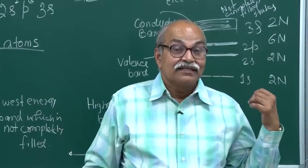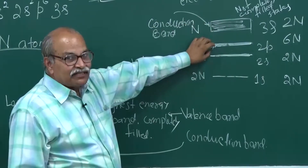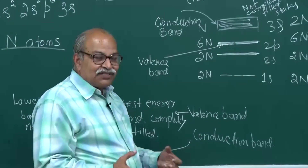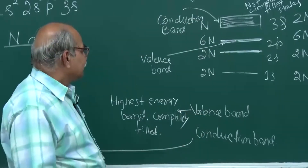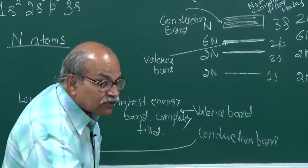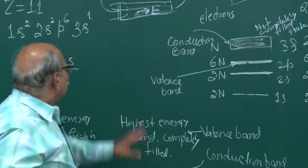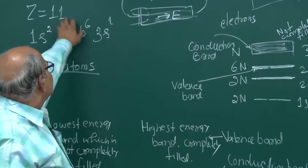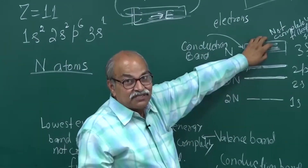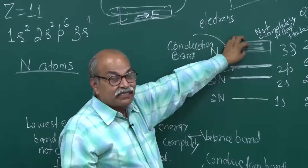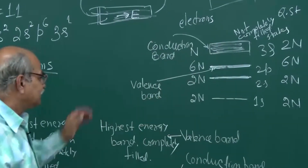That is why it is called the conduction band. The valence band electrons below are all attached to the nucleus, with more localized wave functions. In sodium, the 3s conduction band is half filled — N electrons in 2N quantum states — so conduction is possible. Sodium is a conductor, and all metals have this kind of property.